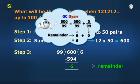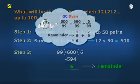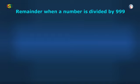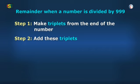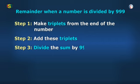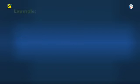Let's move ahead and solve some questions on finding the remainder when a number is divided by 999. Here we need to make triplets from the end of the number, and then we add these triplets and divide the sum by 999 to get the remainder.